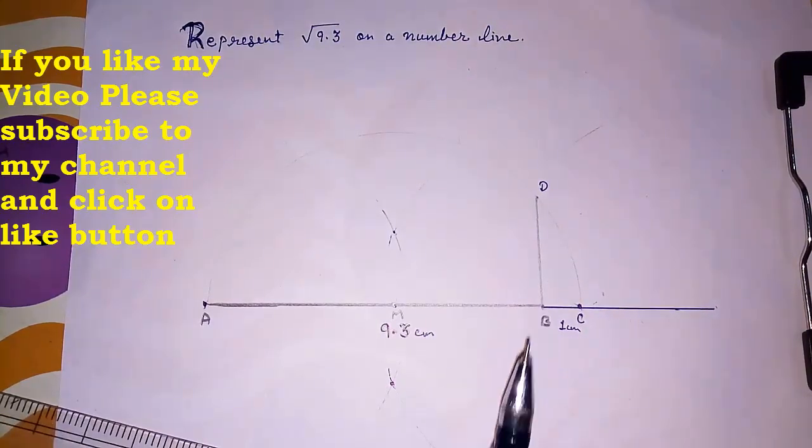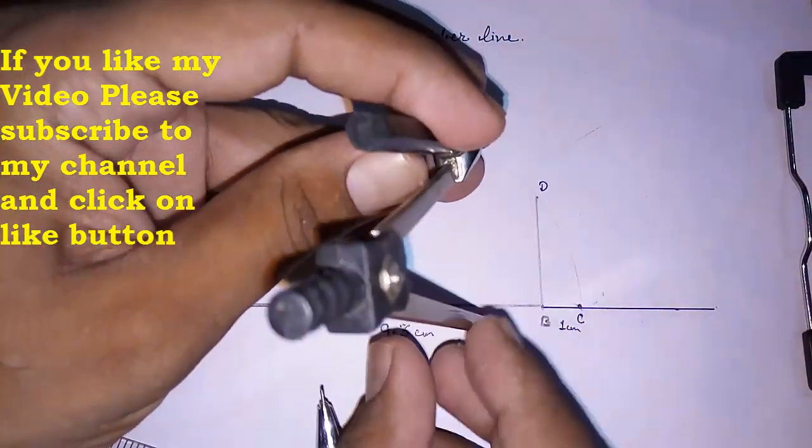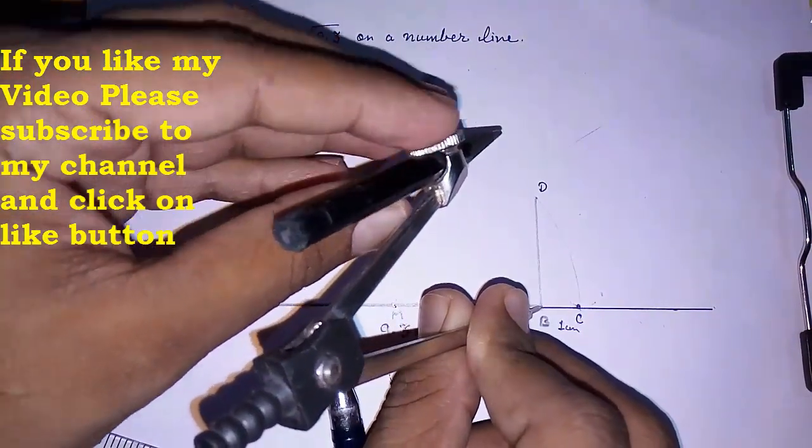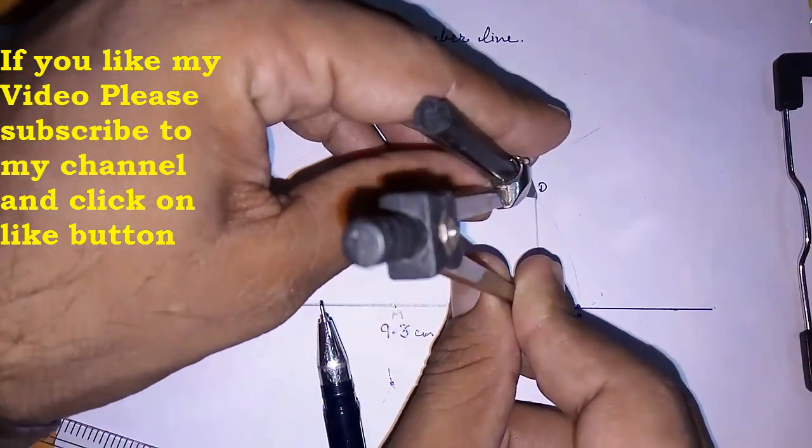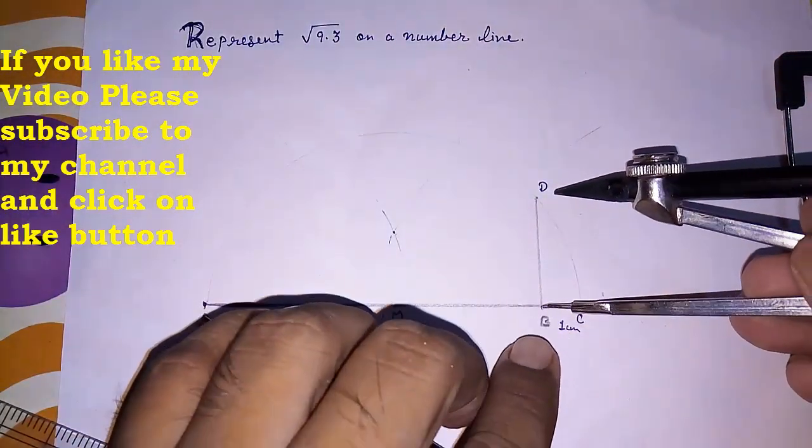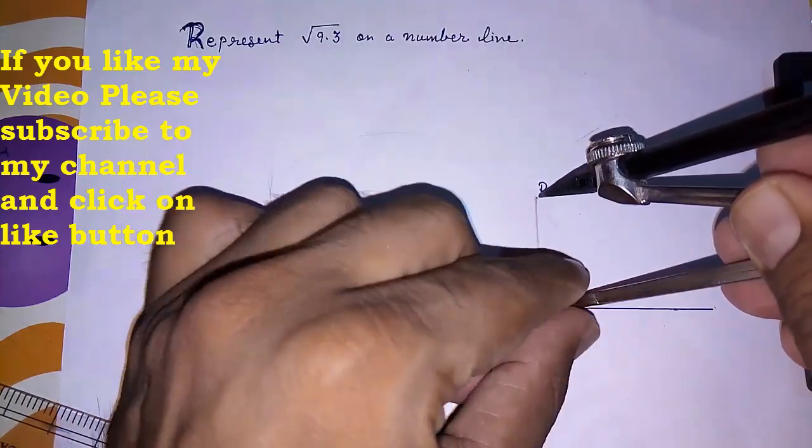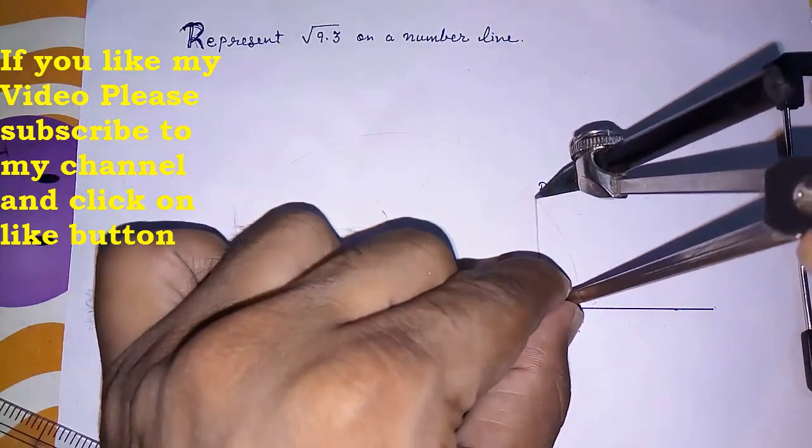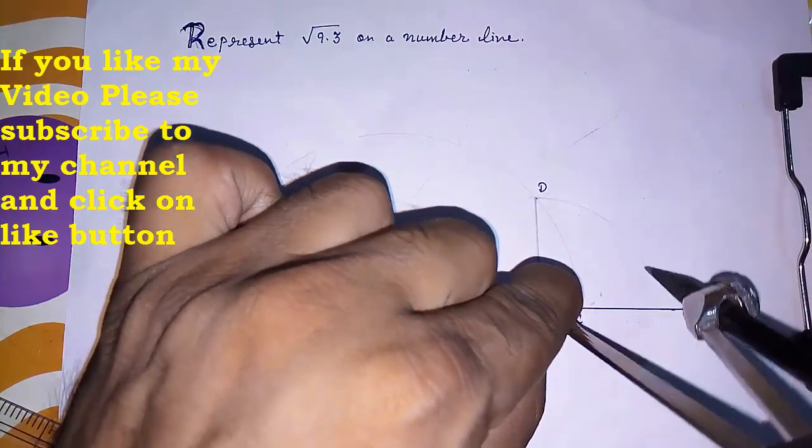And then taking B as a center, we have to put this rounder, taking B as a center and BD as radius. Look here I am drawing it, and this D. We have to draw a semicircle, or you can say arc. Sorry, not a semicircle, we have to draw an arc.